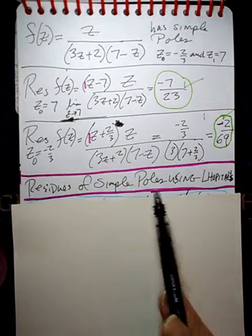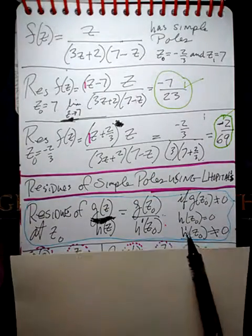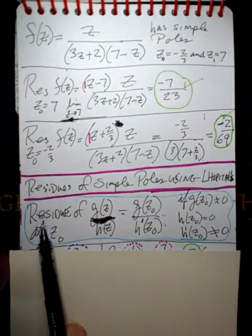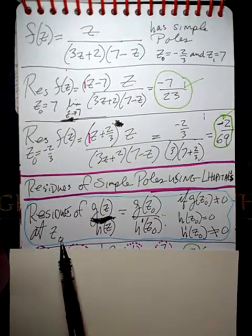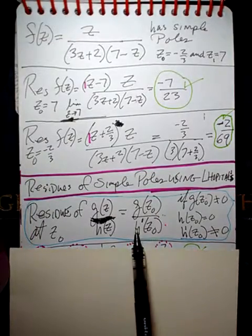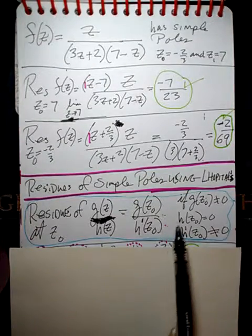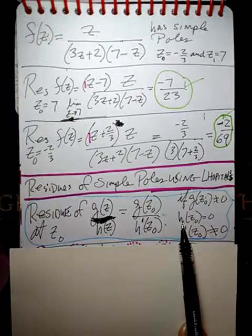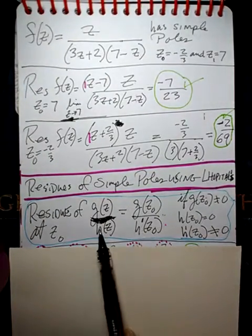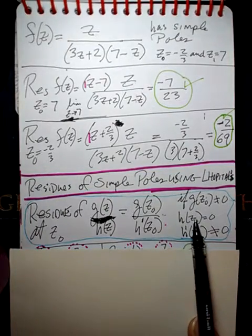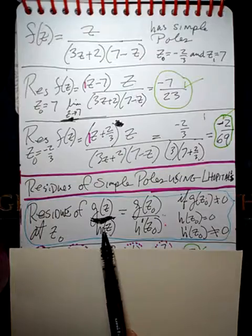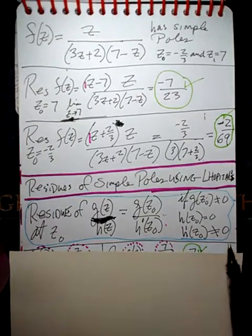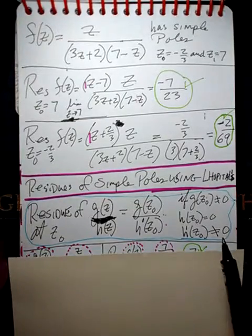Let's now do the residues of simple poles using L'Hopital's rule — this is a new method. The rule is that if you want to do the residue of G of z over H of z at z-naught, it's equal to G of z-naught over the derivative H-prime evaluated at z-naught. This is if G of z-naught does not equal zero, and H of z-naught is equal to zero — so z-naught is whatever makes H of z equal to zero. But the derivative H-prime of z-naught can't equal zero, otherwise we'd have a problematic answer for our residue.